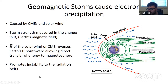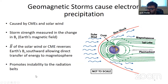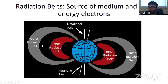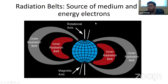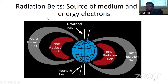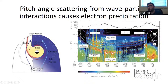This just gives some basic facts that we all know. They're caused by CMEs and solar wind. It causes the change of the Bz magnetic field, promotes the instability of the radiation belts, et cetera. But for the source of medium energy and high energy electrons — and I want to distinguish that from auroral electrons — these tend to be radiation belt electrons. And in particular, what causes radiation belt electrons to get into the atmosphere are pitch angle scattering from wave-particle interactions.